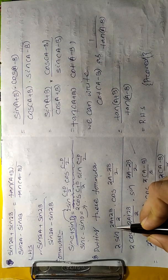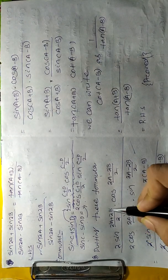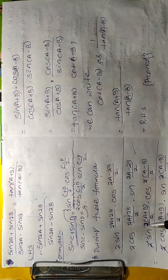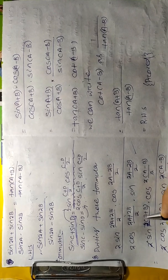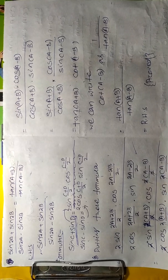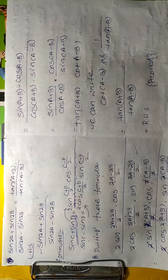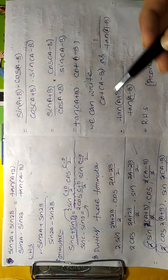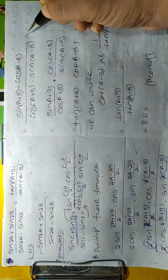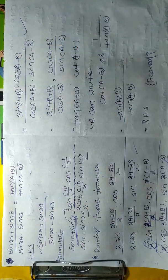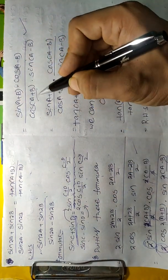The next step is taking 2 common from the numerator. When we take 2 common, it cancels out with the 2 in the denominator. Similarly the same happens for the other term — the 2s cancel out — and the remaining part is sine(A+B), sine(A−B), and cos(A+B).